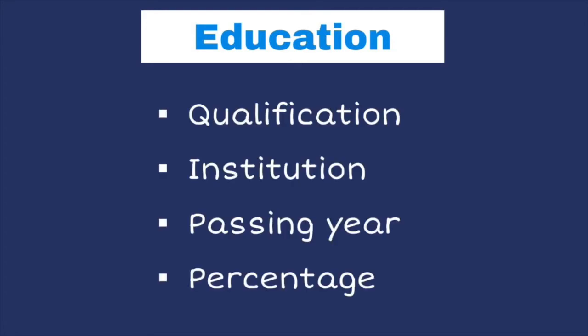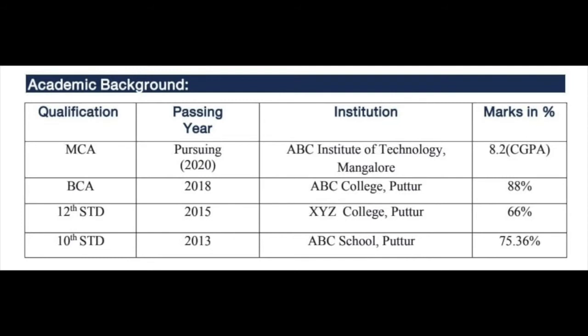The next section is academic background, that is education. The data to add here includes your qualification, institution studied, marks scored, and passing year. This can be added in a tabular format or bullet point format — the key is that the representation is good and easily readable. If you haven't completed your studies yet, you can write 'pursuing' and add the aggregate marks of the semesters you have completed.